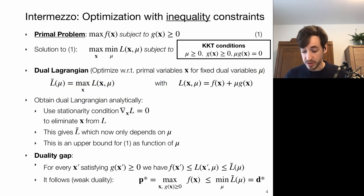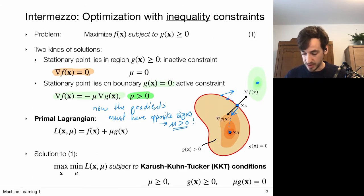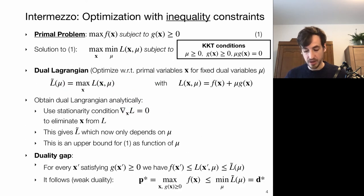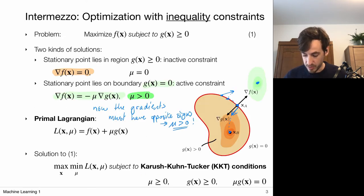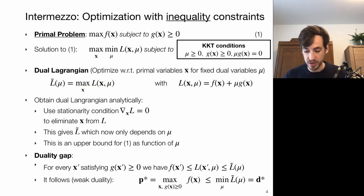We're still considering the problem of maximizing f of x subject to the constraint that it lies inside the region or on its boundary. The recipe for solving this is via this max-min problem, where we need to take into account the KKT conditions — the Karush-Kuhn-Tucker conditions — which need to be satisfied at all times.